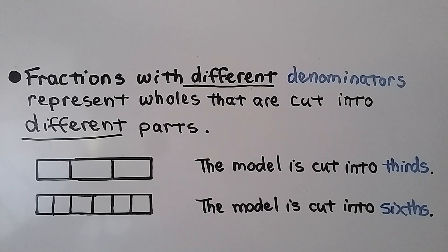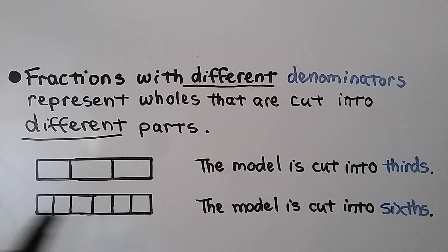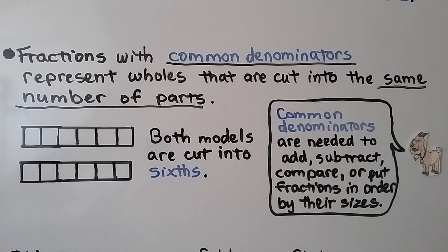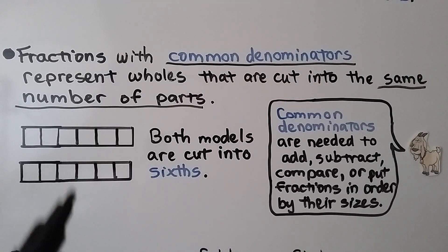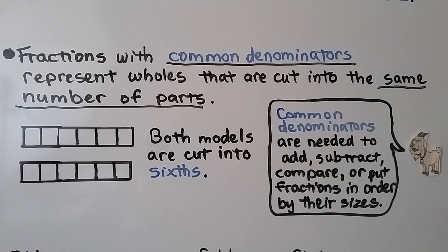Fractions with different denominators represent wholes that are cut into different parts. This model is cut into thirds and this model is cut into sixths — they're the same length, just cut into a different number of parts. Fractions with common denominators represent wholes that are cut into the same number of parts. Both models are cut into sixths. Common denominators are needed to add, subtract, compare, or put fractions in order by their sizes.